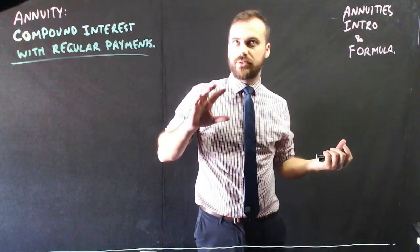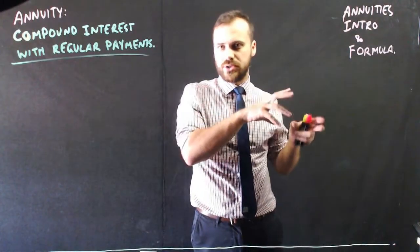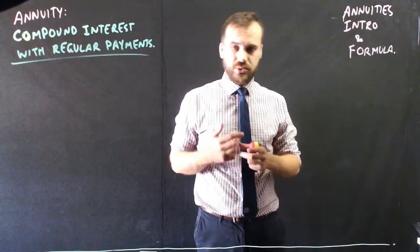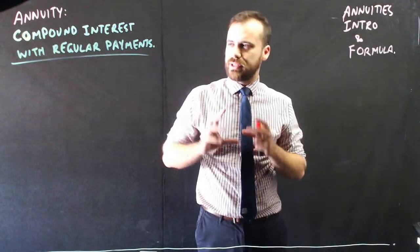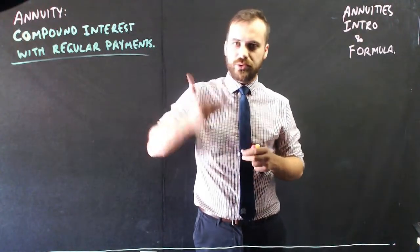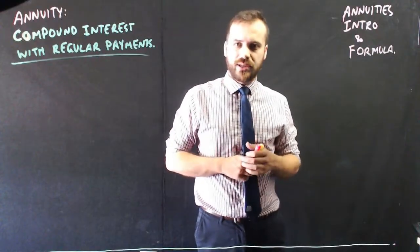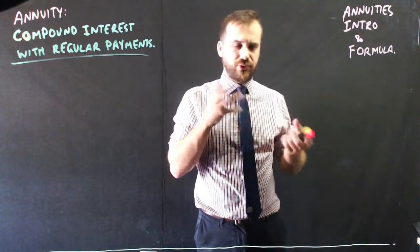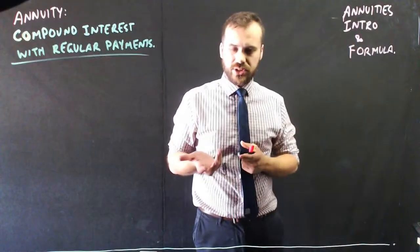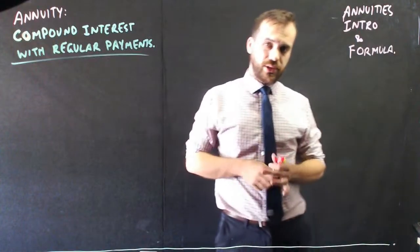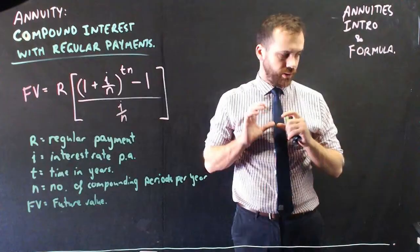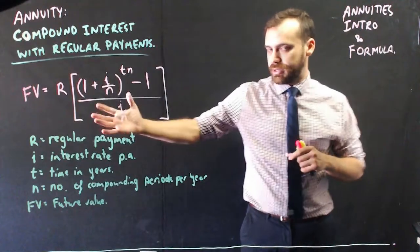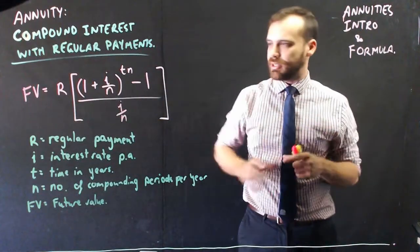We can also use the skills around annuities for things like home loans as well, but let's leave it there for now, compound interest with regular payments. Now, you'll see a lot of different formulas for annuities depending on teachers and things like that. This is the formula I'm going to use. So there's our formula. It's pretty ugly, but it works.